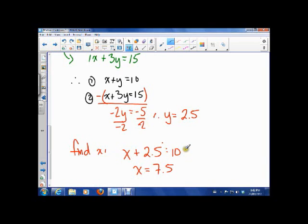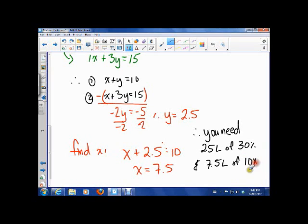So, now we can make our final statement. You need 2.5 liters of the 30% solution and 7.5 liters of the 10% solution. And, that will give you your 10 liters of 15% solution. So, let's go to the next problem.